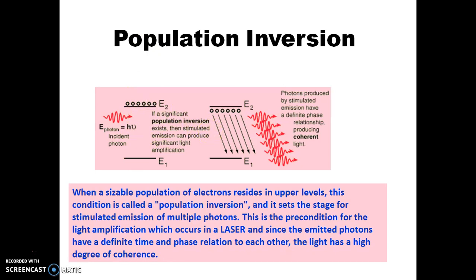In order to get this population inversion, there is a need to generate a metastable state. This metastable state is an intermediate energy level where the lifetime of atoms is 10 to the minus 3 seconds, so we can achieve population inversion. And the atoms can be excited to the higher energy level by a pumping method.